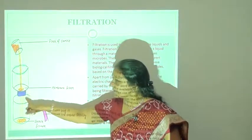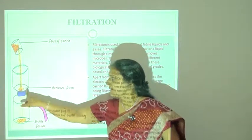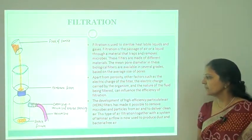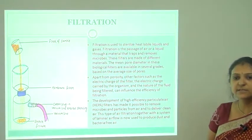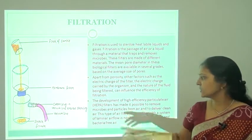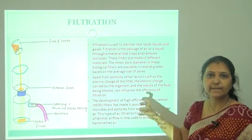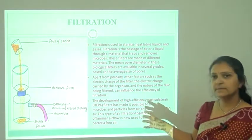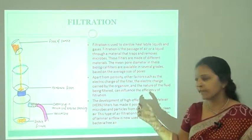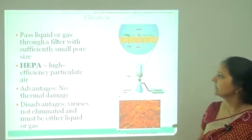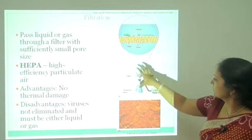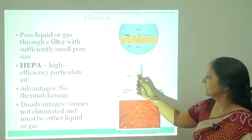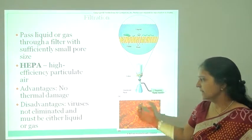The heat-sensitive material is added from the top, passes through the membrane filter, and the sterile liquid is collected. Another type is the HEPA filter — high efficiency particulate air filter — which is used in laminar air flow. The HEPA filter provides sterile air into the laminar air flow, making the chamber free from any kind of living organisms. This is the filtration unit with the vacuum pump by which liquid is pumped out and the membrane filter retains the microorganisms.